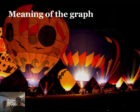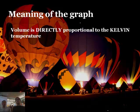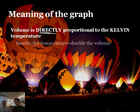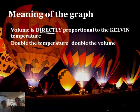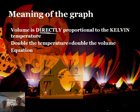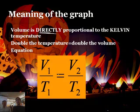Yeah, the problem with Celsius is it can go in the negative land, and these equations don't work if you go down to negative land. So what's the meaning of the graph? Volume is directly proportional to the Kelvin temperature. So if the Kelvin temperature is doubled, the volume is doubled. And the equation is V1 over T1 equals V2 over T2.